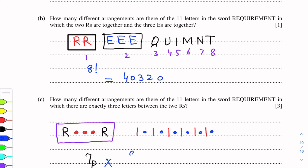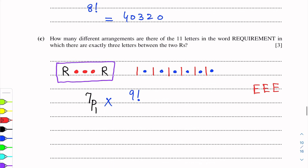Nine factorial. Now we can see here, three letters are repeated: E, E, and E. So we do 9 factorial over 3 factorial. Because three E's are the same, the answer is 60,480.